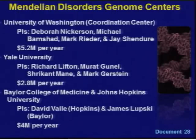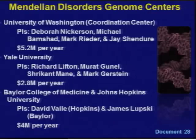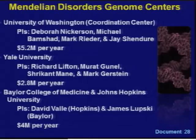The second component involves new Mendelian Disorders Genome Centers. NHGRI partnered with the National Heart, Lung, and Blood Institute to invest $48 million over four years — $40 million from NHGRI and $8 million from NHLBI — funding three centers at the University of Washington (also serving as coordinating center), Yale University, and a Baylor College of Medicine/Johns Hopkins University partnership. These centers will collaborate with a worldwide network of rare disease experts to sequence the genomes of thousands of patients and family members, identifying genetic variants responsible for rare genetic disorders. The University of Washington will host the sole web portal for sample solicitation.